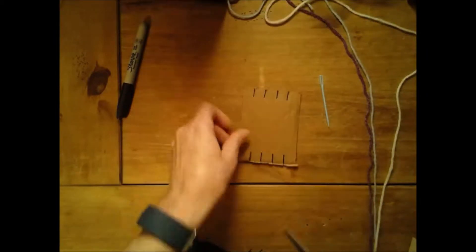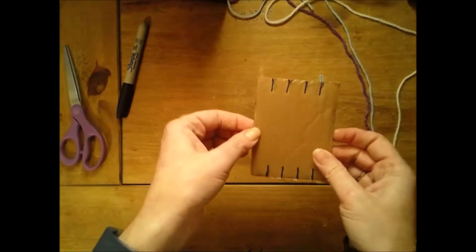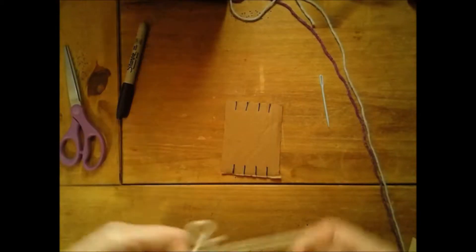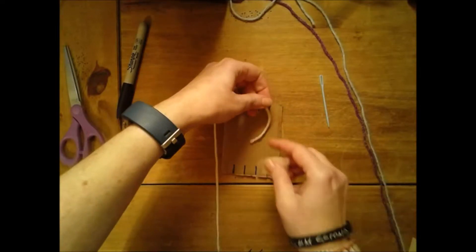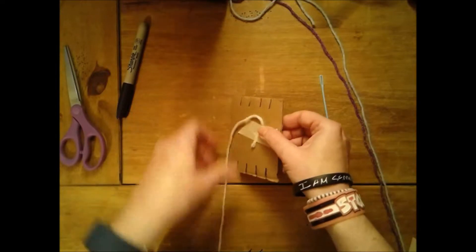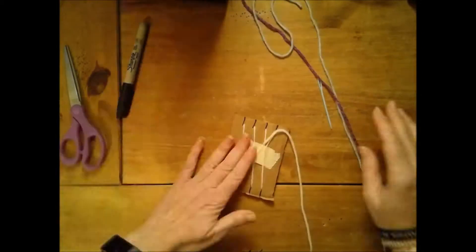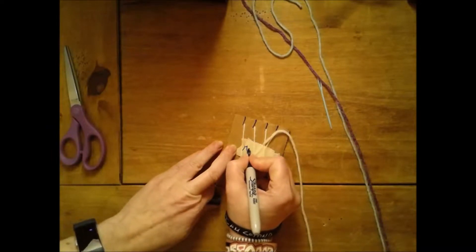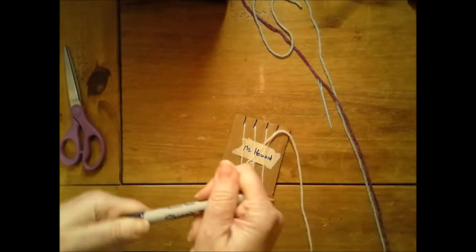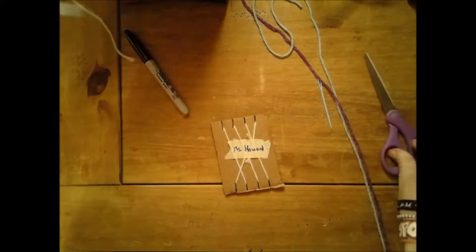And then we're going to cut them. Now that I have all my slots cut on my loom, I am ready to attach my yarn. So I'm going to take a piece of yarn and tape it to the back, and then I'm going to wrap it around the cardboard using these slots. I'll go ahead and put my name on the tape so that I know that this is my weaving.